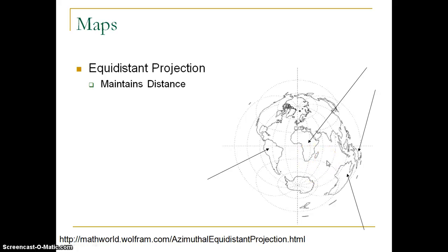You can see each of these properties in the map, how they're distorted based upon what exactly the cartographer is trying to do.